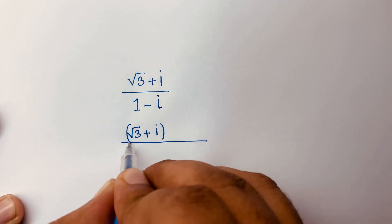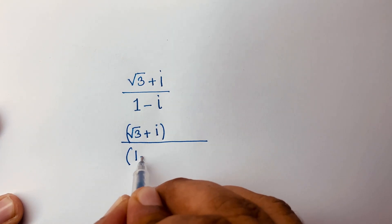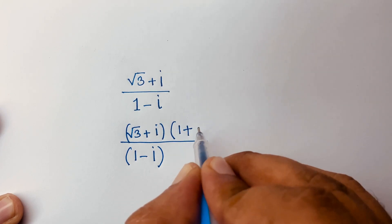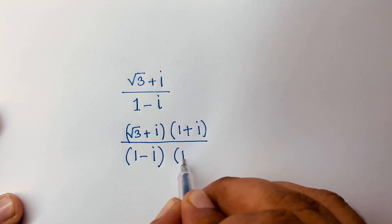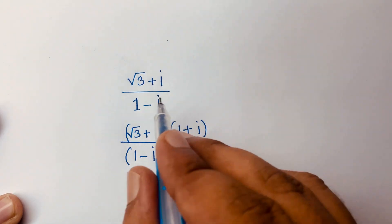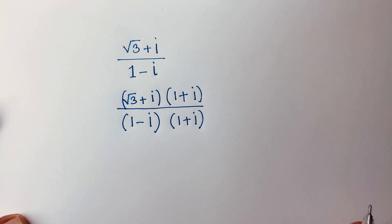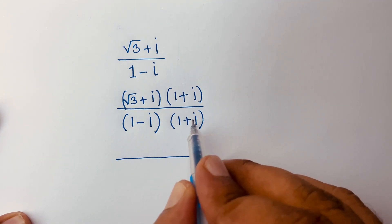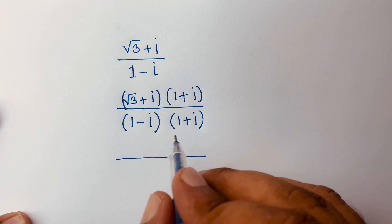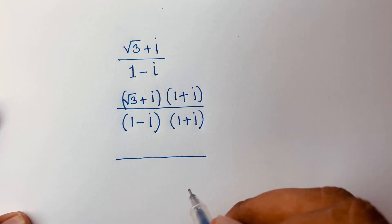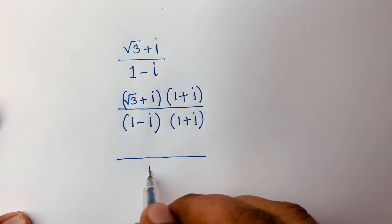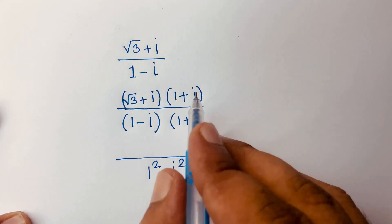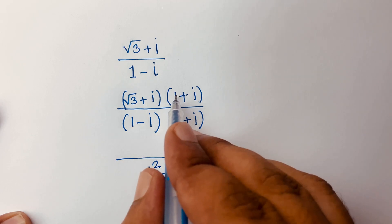Over here is 1 minus i, and I multiply by 1 plus i over 1 plus i. Using the identity (a + p)(a - p) = a² - p², I can say the denominator becomes 1 squared minus i squared.